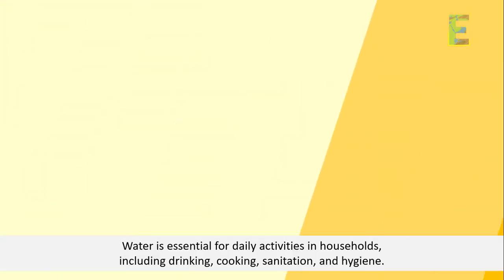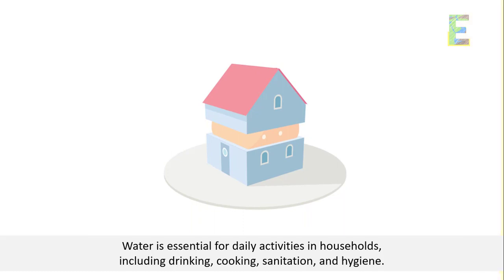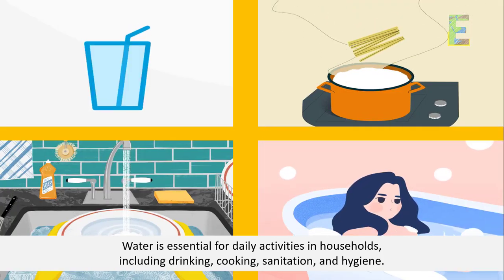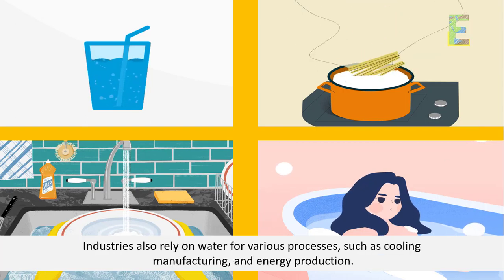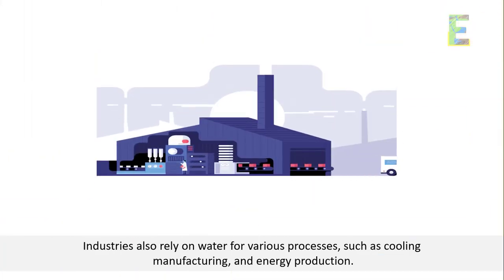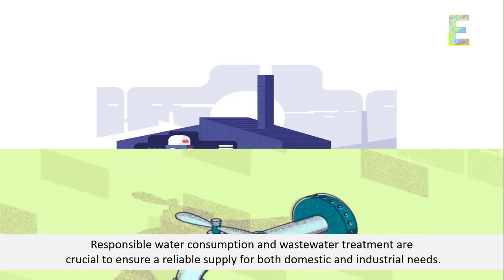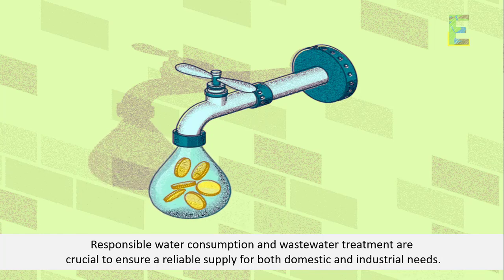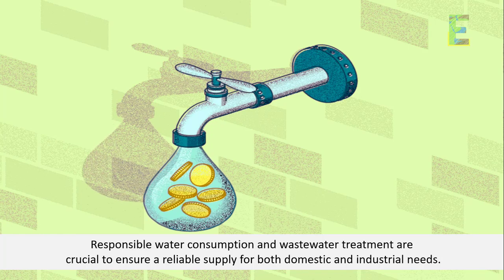Water is essential for daily activities in households, including drinking, cooking, sanitation, and hygiene. Industries also rely on water for various processes, such as cooling, manufacturing, and energy production. Responsible water consumption and wastewater treatment are crucial to ensure a reliable supply for both domestic and industrial needs.